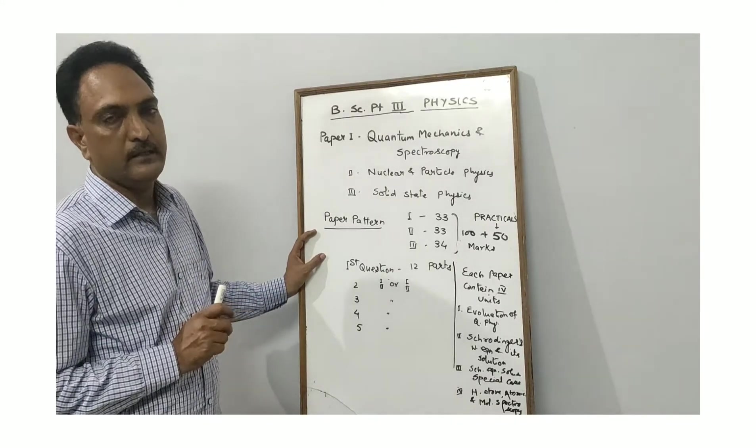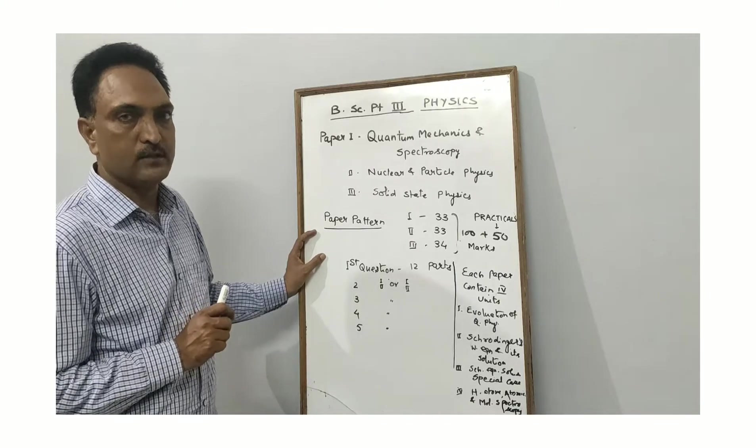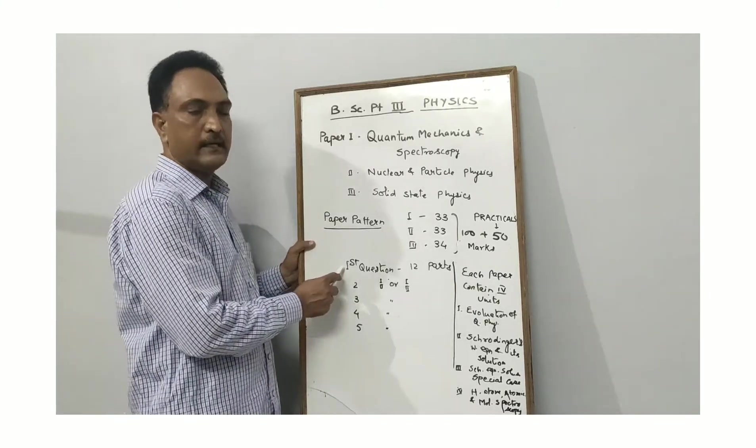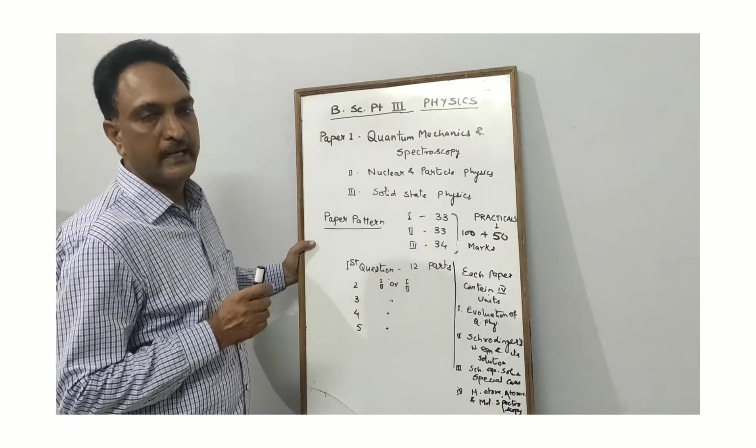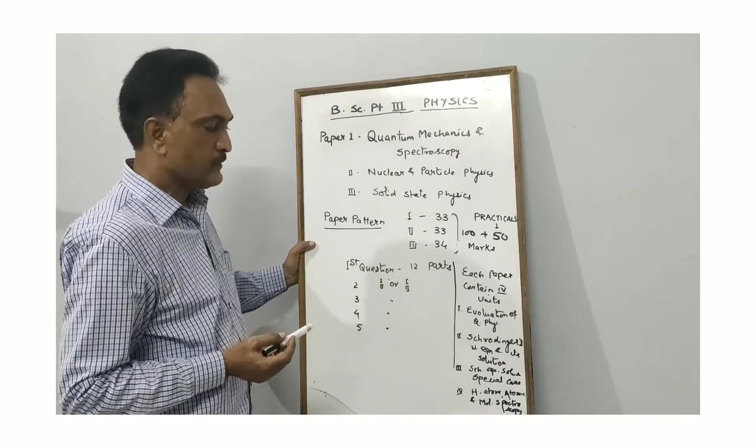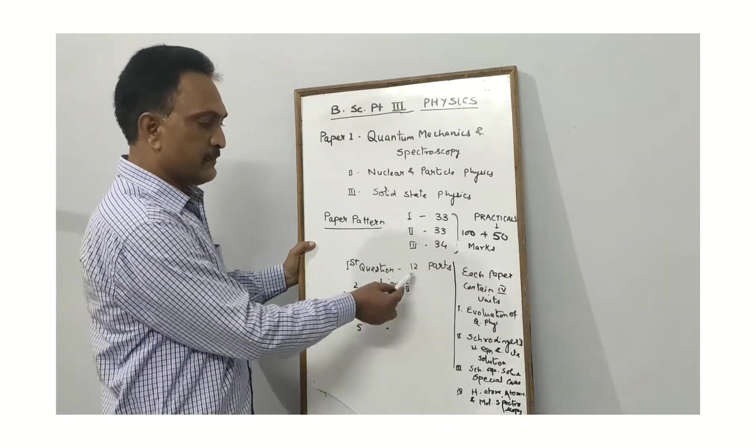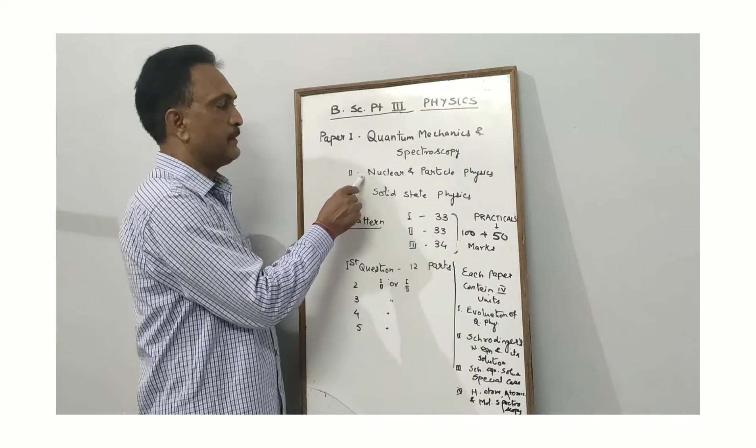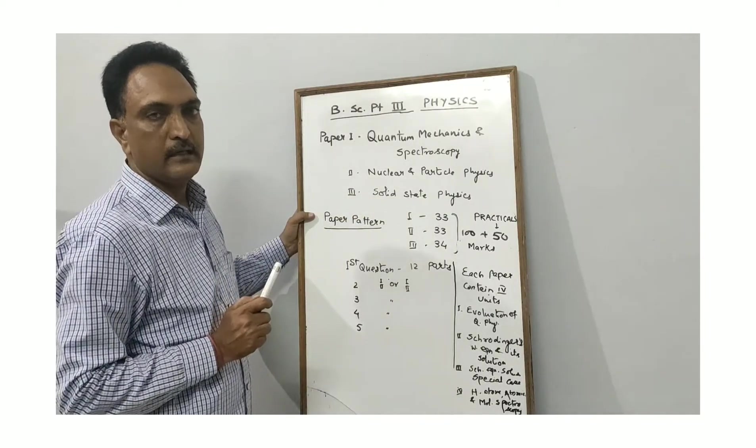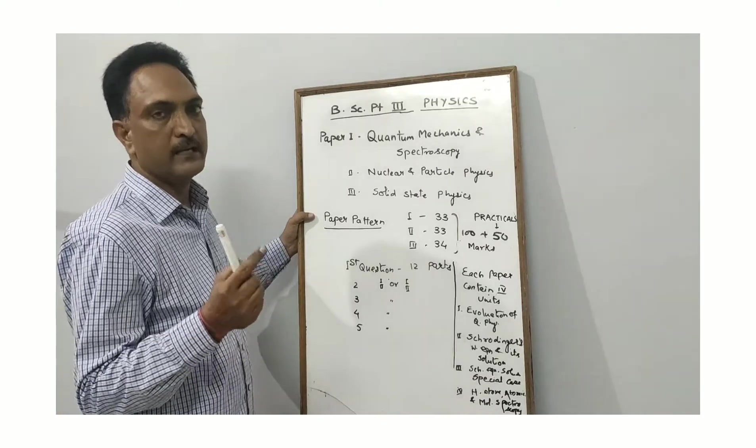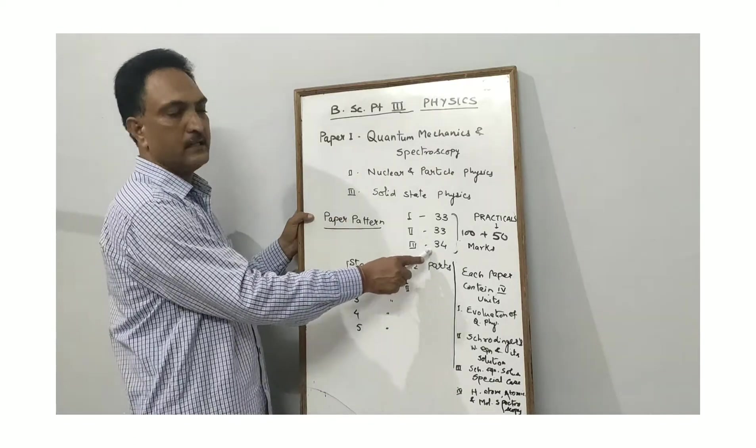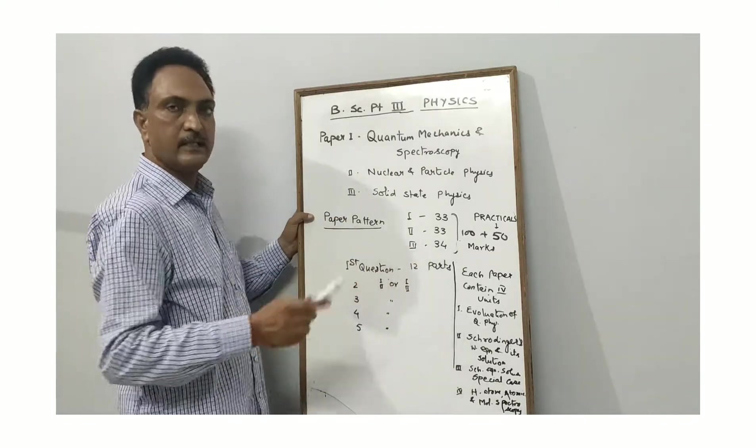You have to attend all 5 questions. The first question contains 12 parts with small questions. In the first and second paper, you will have 9 questions. In the third paper, you will have 10 questions.